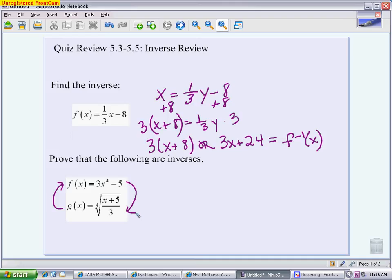So I'm going to start with putting g inside of f. So I'm going to have 3 times the fourth root of (x plus 5)/3, all to the fourth power minus 5. The fourth root and the fourth power cancel. The 3 divided by 3 cancels. The 5 minus 5 cancels, and it leaves you with x.